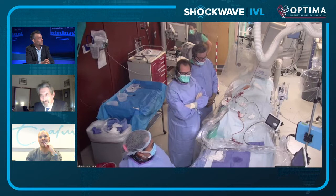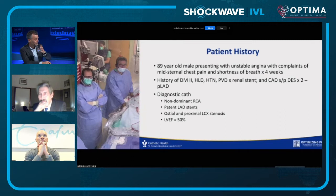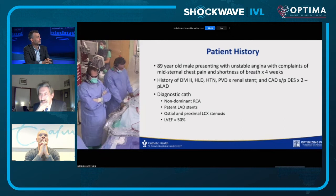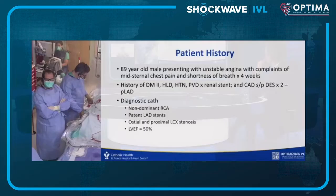Richard introduces the case: an 89-year-old gentleman who presented a couple of weeks ago with unstable angina, complaints of progressive angina discomfort over four weeks. He has a history of CAD with previous stents to the LAD, multiple coronary risk factors, and preserved EF around 50%. The right is relatively small and non-dominant.